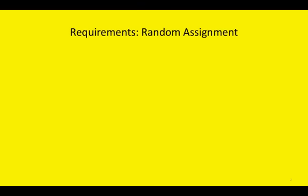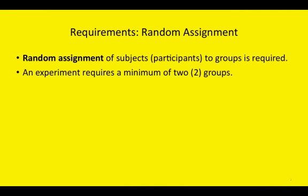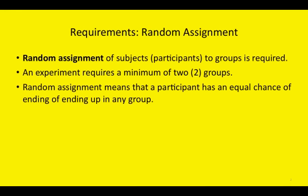Now I'm going to talk about random assignment. Random assignment of subjects, also called participants, to groups is absolutely required. An experiment requires a minimum of two groups. One called the experimental group, the other a control or comparison group. Random assignment means that a participant has an equal chance of ending up in any group.